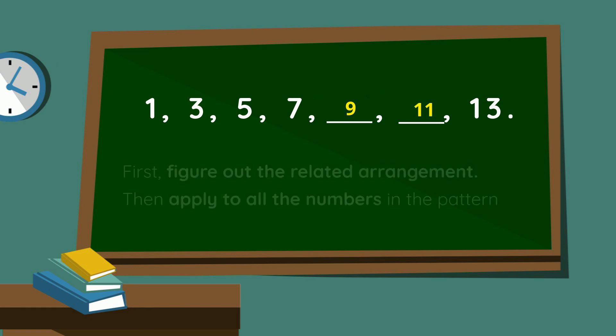Example time! Complete the number pattern and fill in the missing numbers. What is the repeated arrangement between these numbers? Well, what did we do to number 1 to get 3? If you said add 2, you're correct. And then 3 added 2 gives us 5. 5 add 2 gives us 7. Which means that the pattern is that we add 2 to the number before to finish the pattern. So 7 add 2 gives us 9, and 9 add 2 gives us 11. In order to figure out any pattern, first figure out the related arrangement and then apply to all the numbers in the pattern.